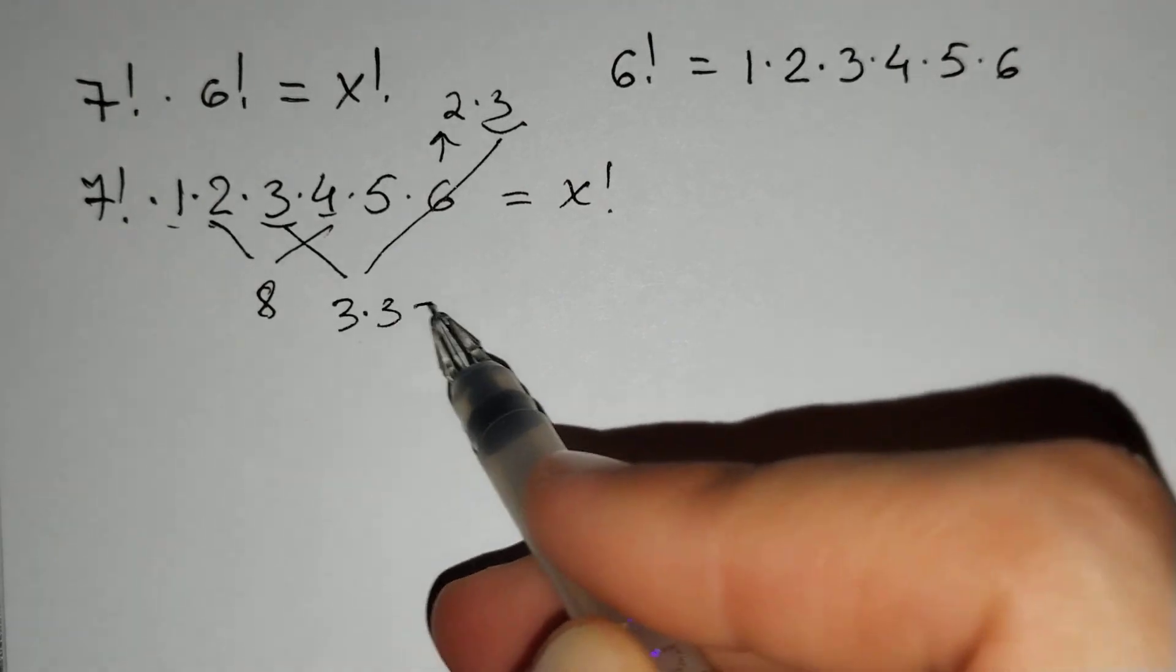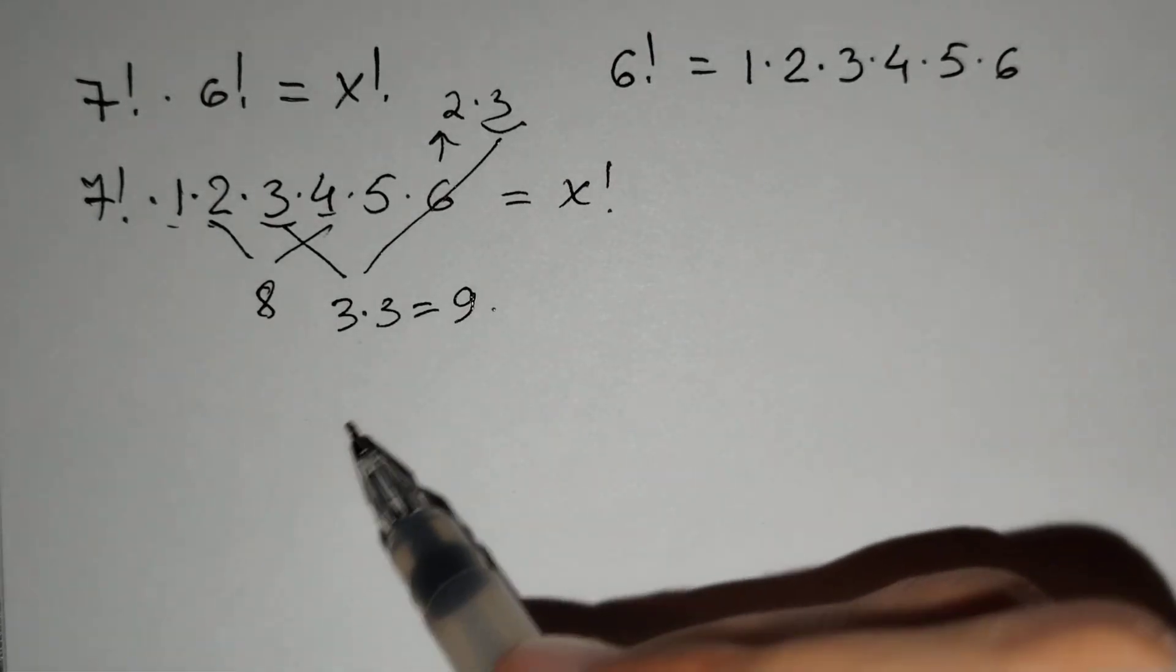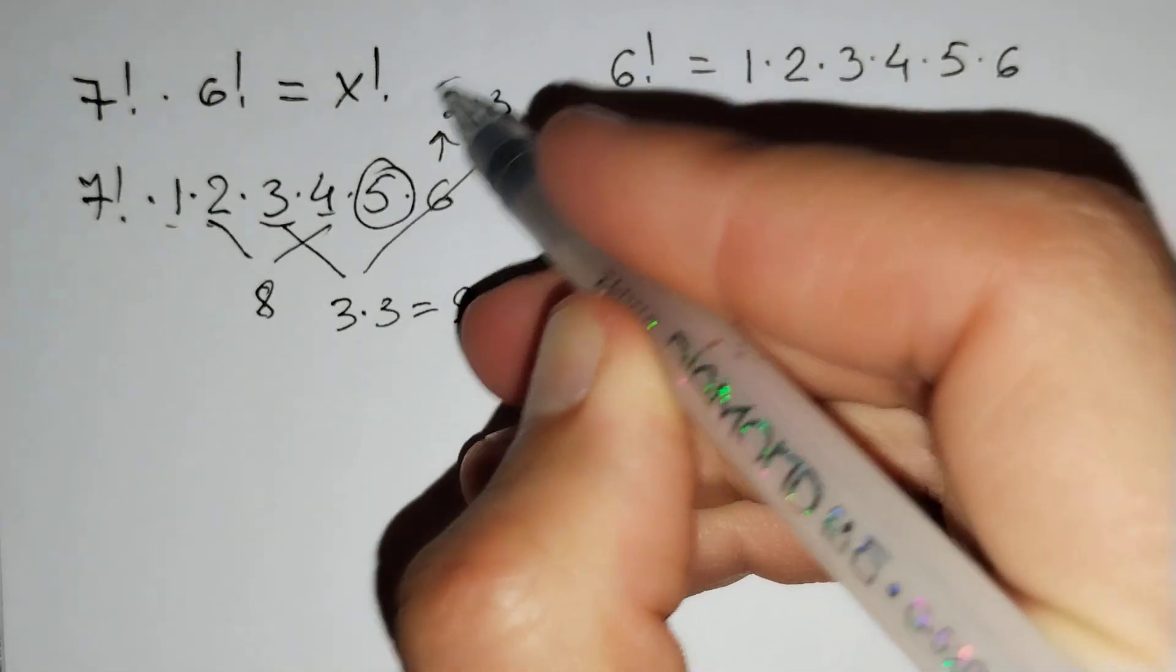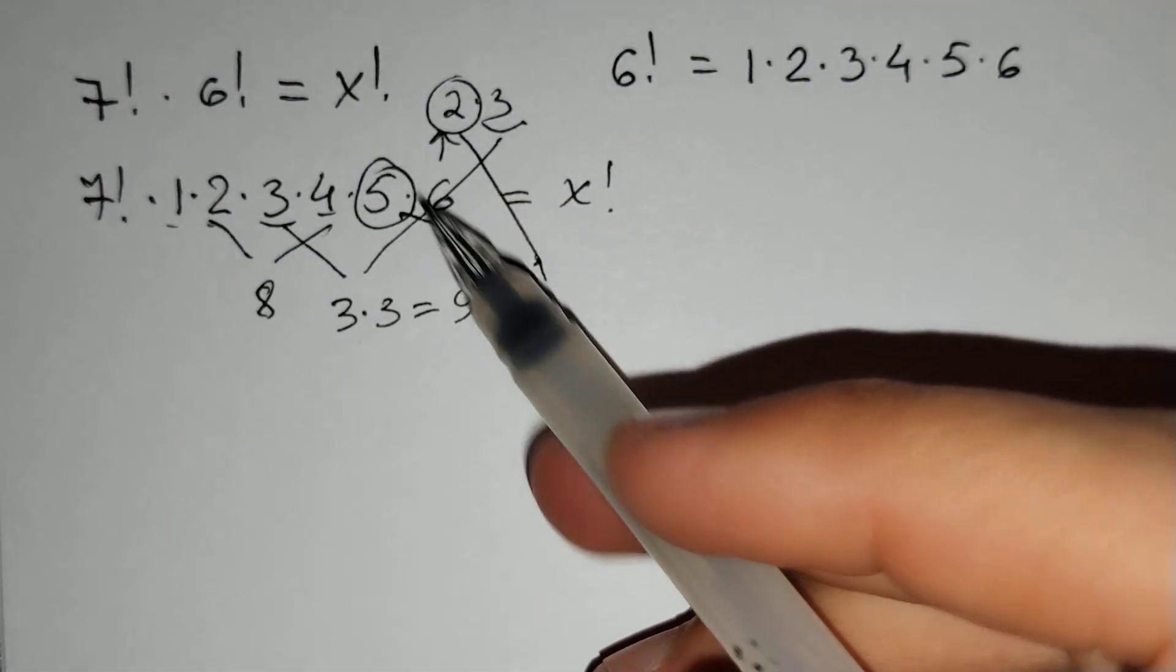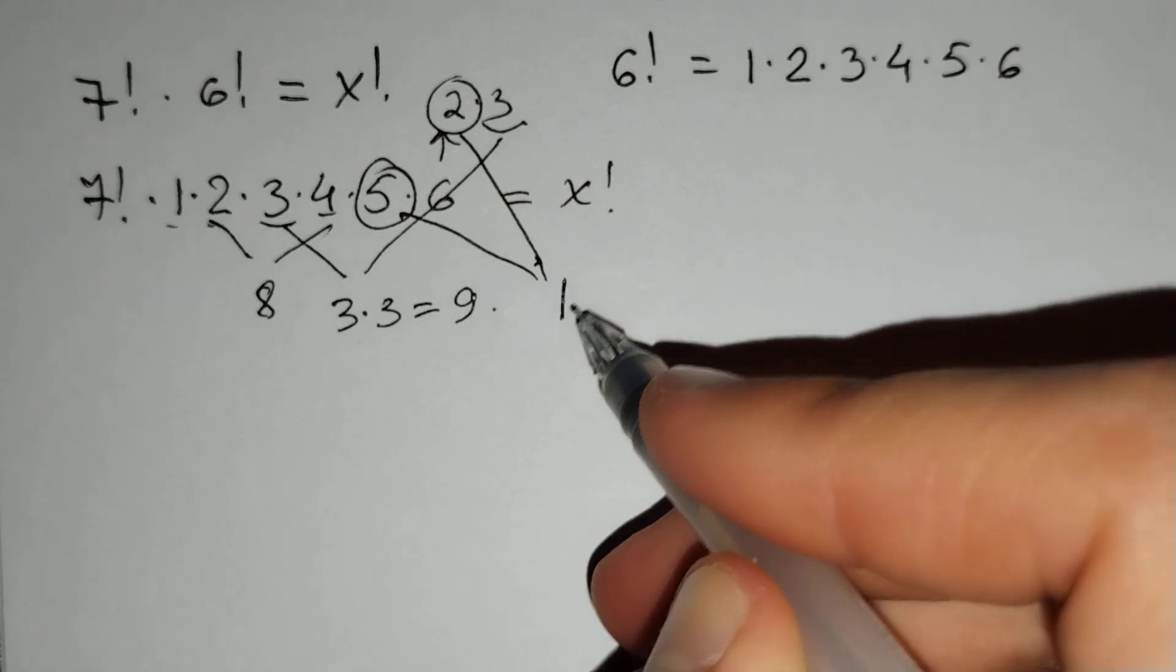3 times 3 equals 9. And 5 remain here, and 2 remain here. If we multiply these two numbers, it equals 10.